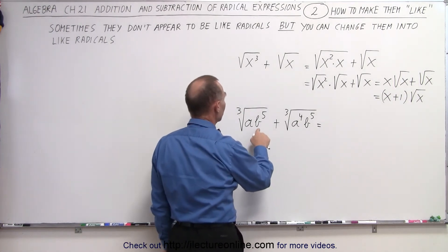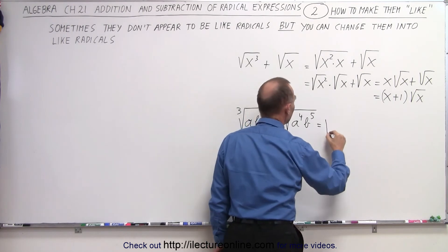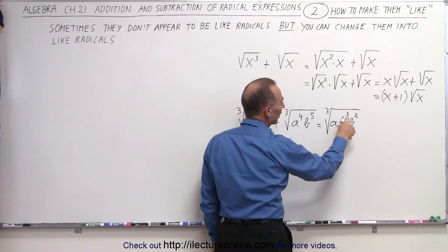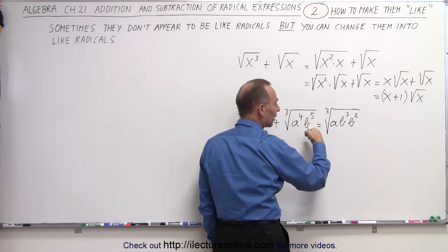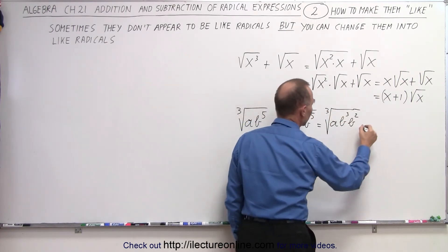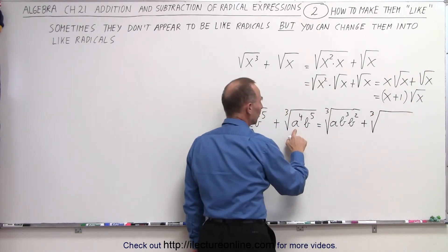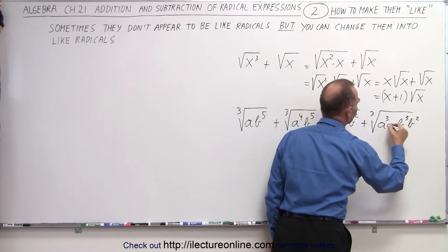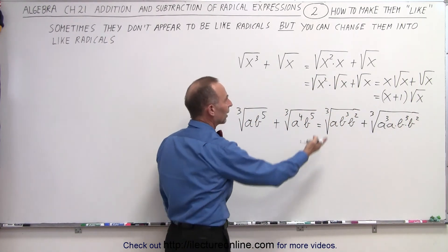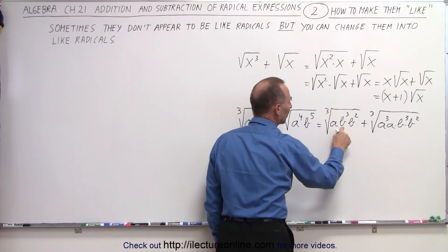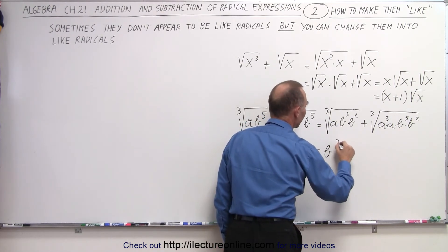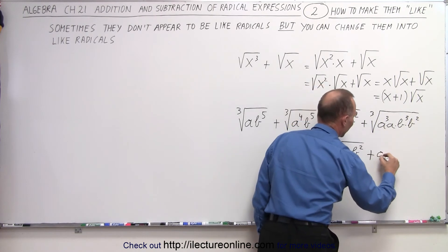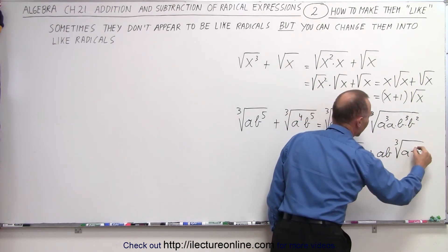The first thing we can do here is notice that we have b to the fifth, which means this can be written as the cube root of a b cubed times b squared. And notice, if I have the power the same as the root, I can pull that out. Then over here, I have plus the cube root of — I can do the same with the a — I have a cubed times a to the first power and b cubed times b to the second power. We can simply pull them out: the cube root of b cubed comes out, so this is equal to b times the cube root of a b squared. And here, I can pull out an a and a b, so I have a times b times the cube root of a b squared.